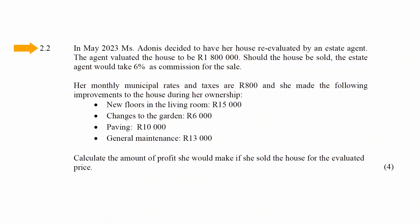Question 2.2 states that in May of 2023, Macedonis decided to have a house re-evaluated by an estate agent. The agent evaluated the house to be 1,800,000 Rand. Should the house be sold, the estate agent would take a 6% commission for the sale.